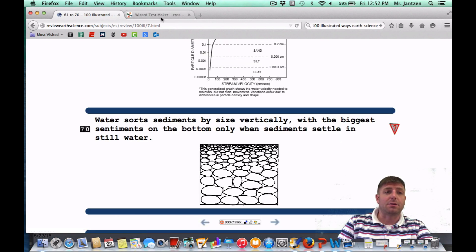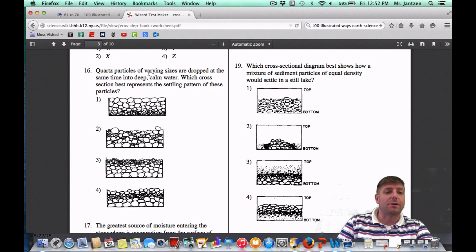While quartz particles of varying sizes are dropped at the same time into the deep calm water, which cross section best represents the part of the settling pattern of these particles? So once again, the biggest on the bottom, the smallest on the top, nice and sorted, that would be choice number three. Or it could be like this one: Which cross sectional diagram best shows how a mixture of sediment particles of equal density would settle in a still lake? Once again, biggest on the bottom, smallest on the top, or choice three.